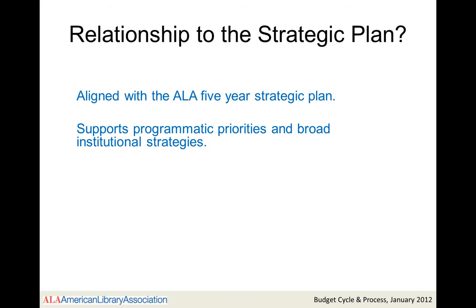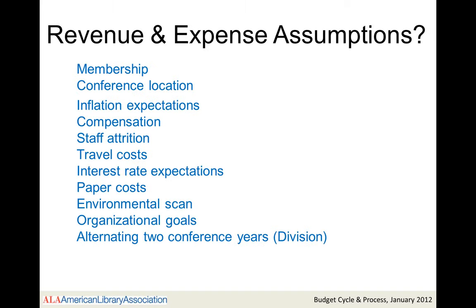The budget is aligned with the Association's Strategic Plan. These plans cover a five-year period. The budget will also directly support the Association's programmatic priorities, which are approved by ALA Council and support the broad institutional strategies. The budget is based on certain revenue and expense assumptions, including a variety of revenue and expense assumptions at play, such as membership numbers, inflation expectations, and the timing and location of conferences.